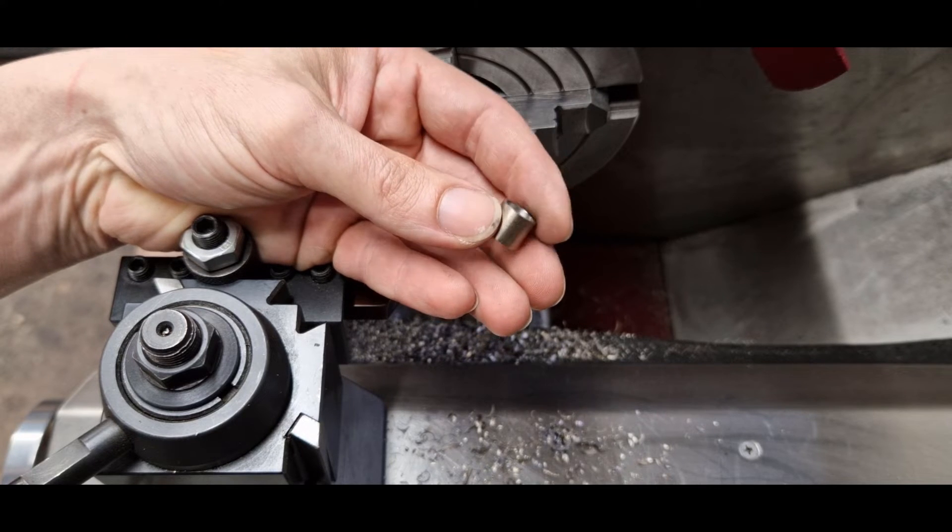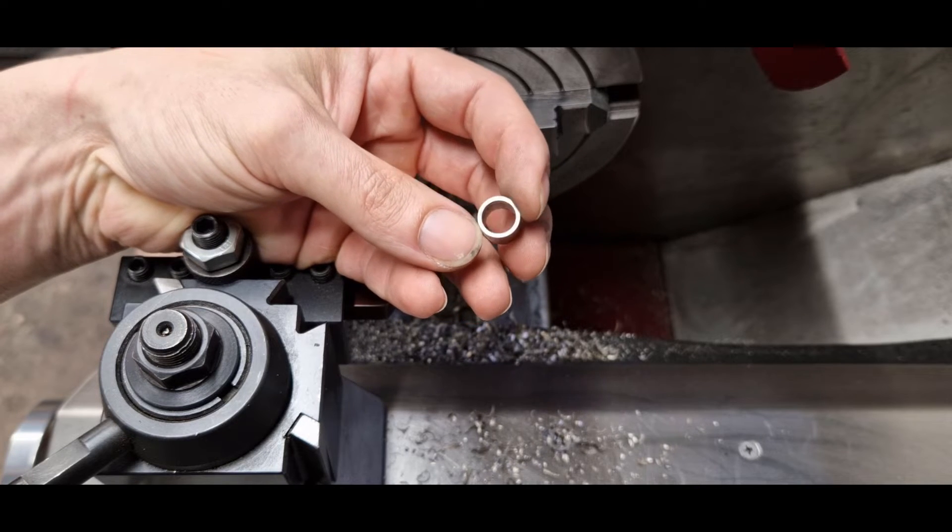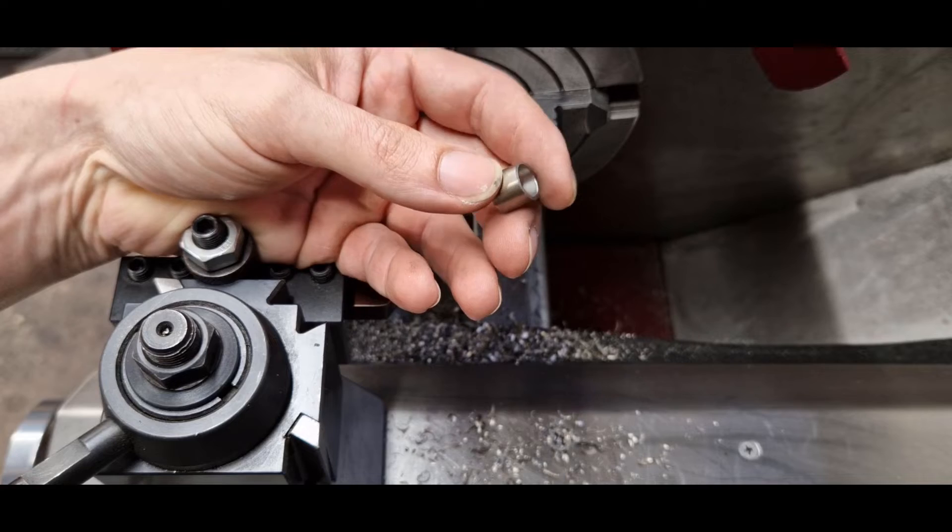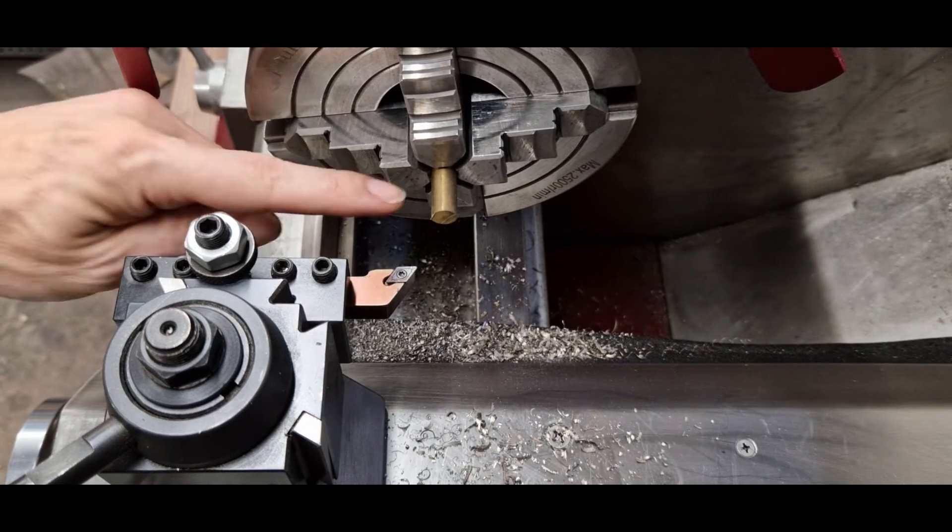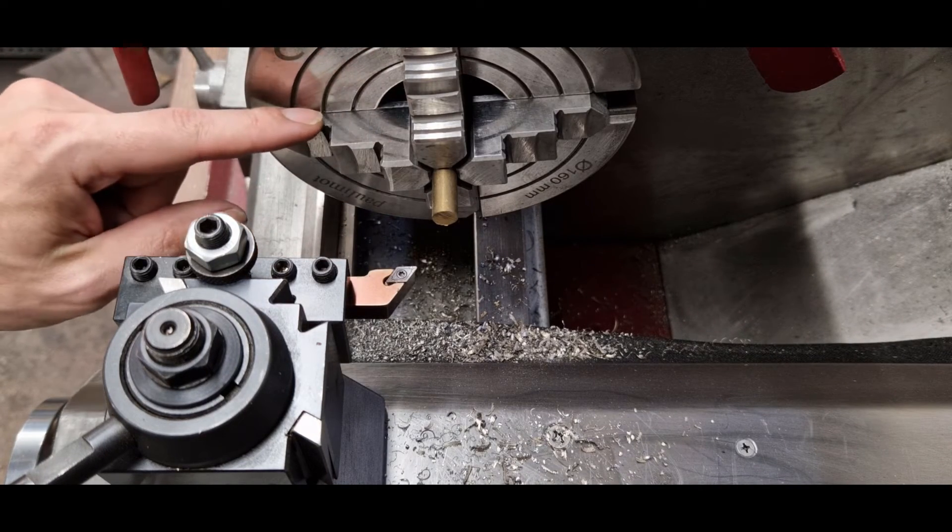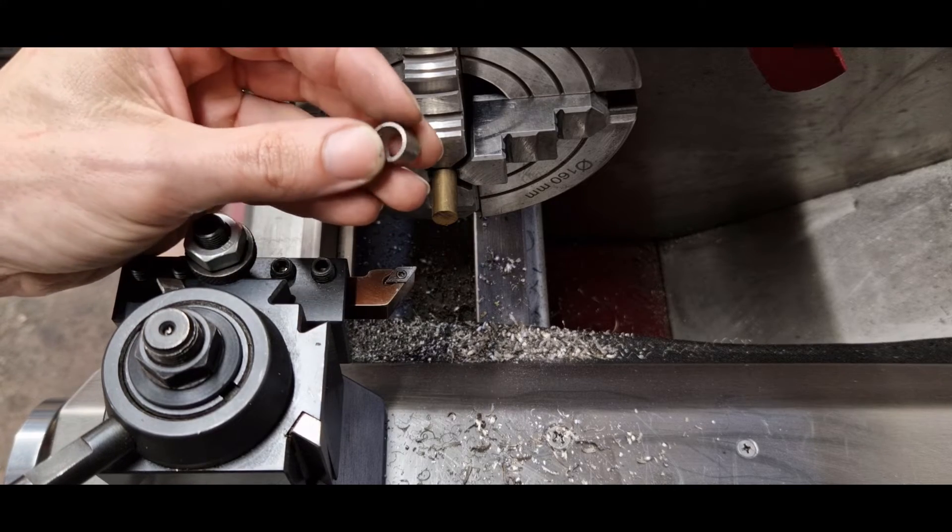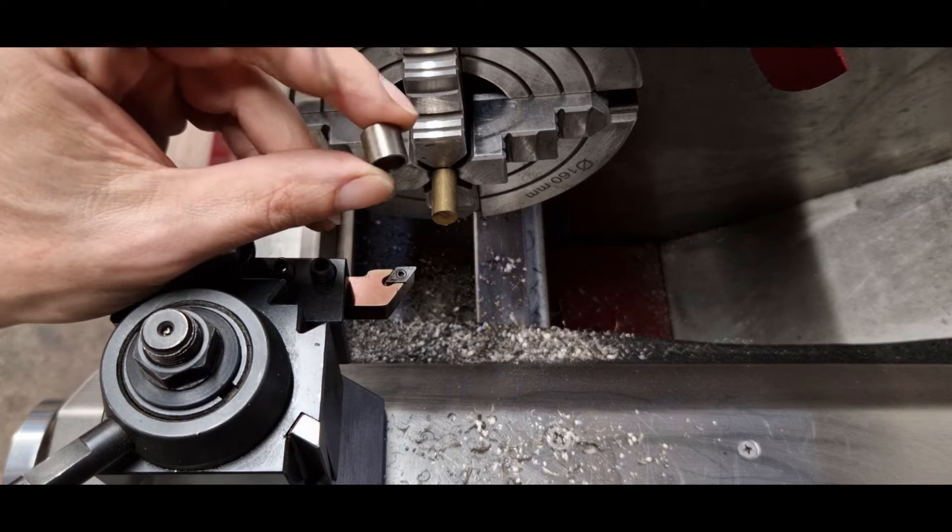Those are the parts that I parted off. They are too thin and too small to put back in the chuck. So I'm going to use this piece of brass to make a mandrel, glue this part on it and machine it until it's finished.